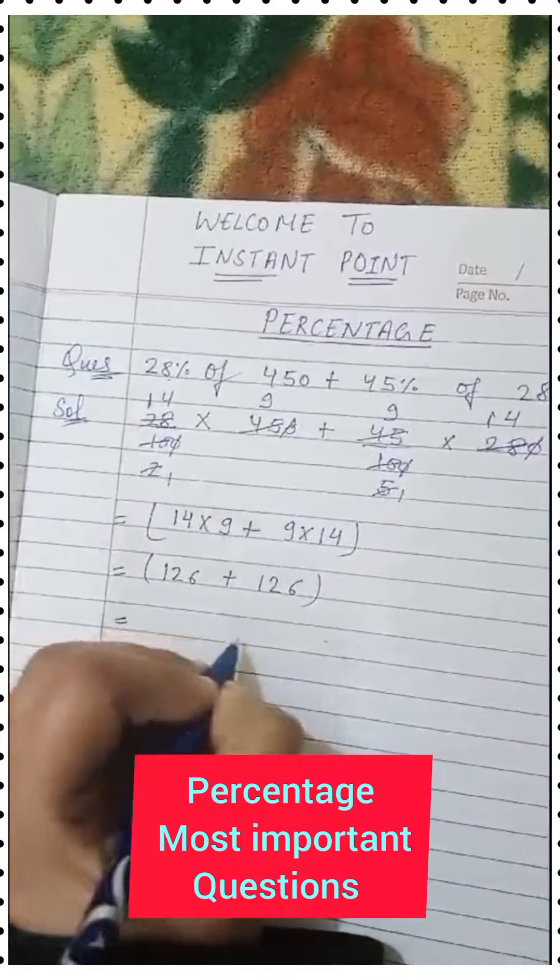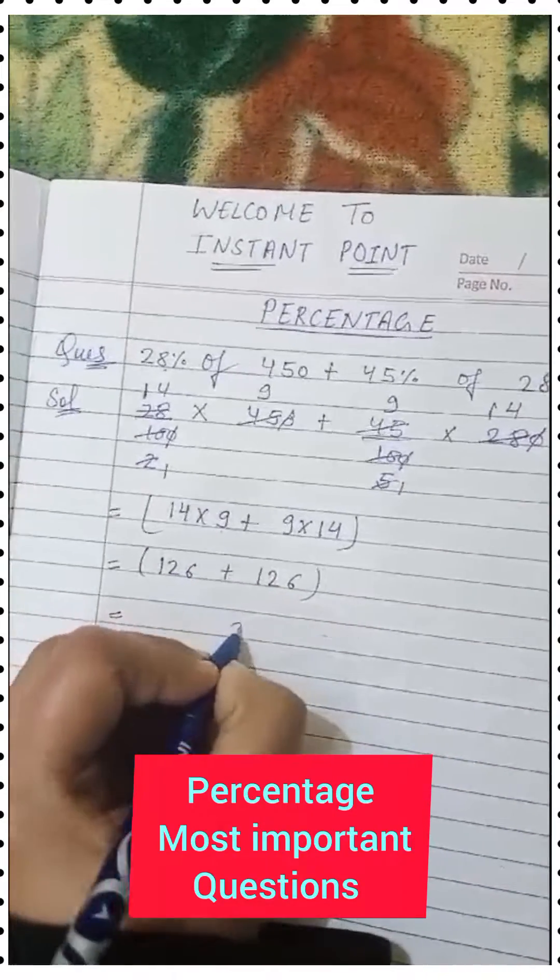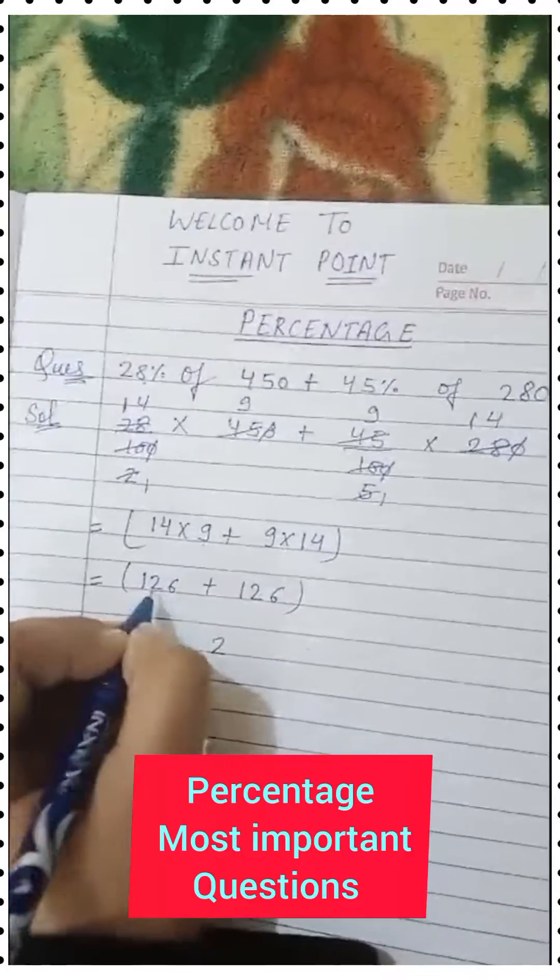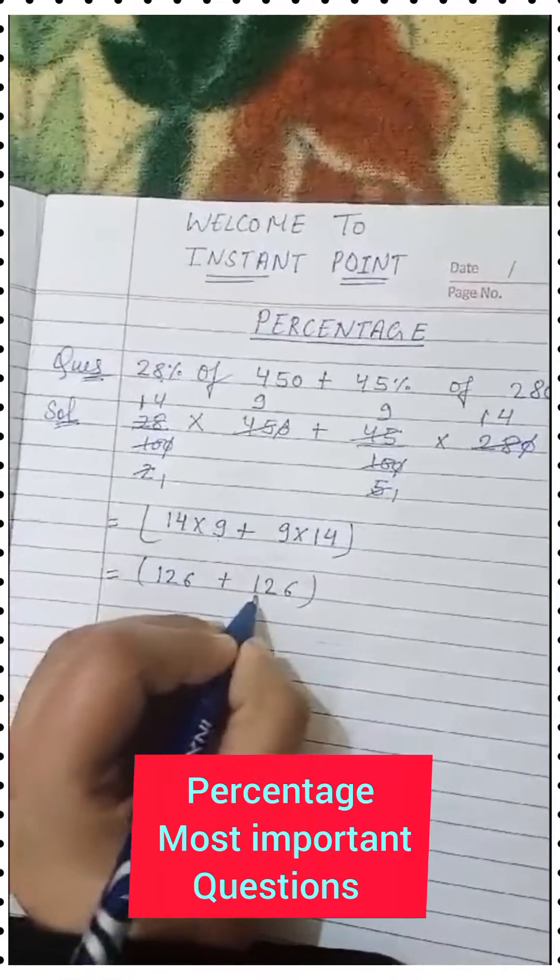Now add 126 plus 126. 6+6 is 12, carry the 1. 2+2 is 4, plus 1 is 5. 1+1 is 2. So we get 252.